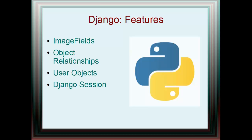We'll look at user objects and how to create users — including how to sign up users for a particular site, allow those users to log in, and then only allow those users to access the appropriate data. We'll also look at the Django session, a way to store values that persist from a user's login session and are deleted when that user logs out or exits the page.